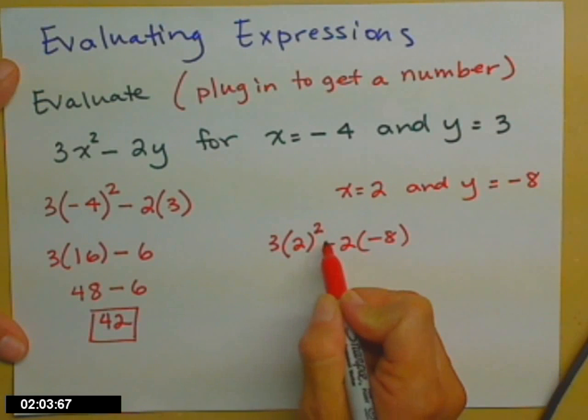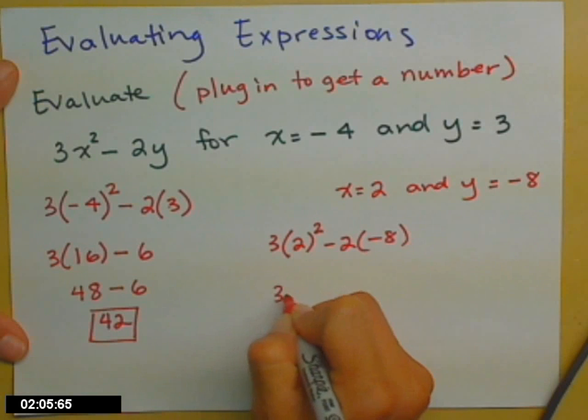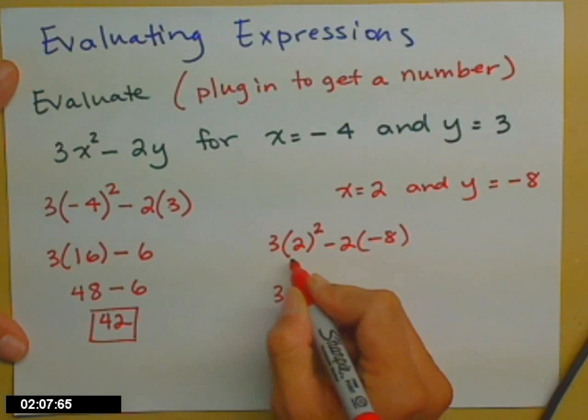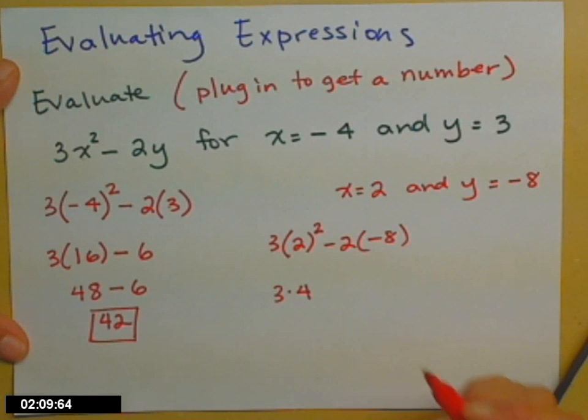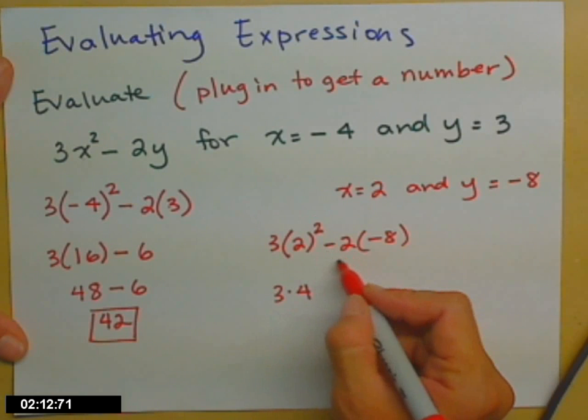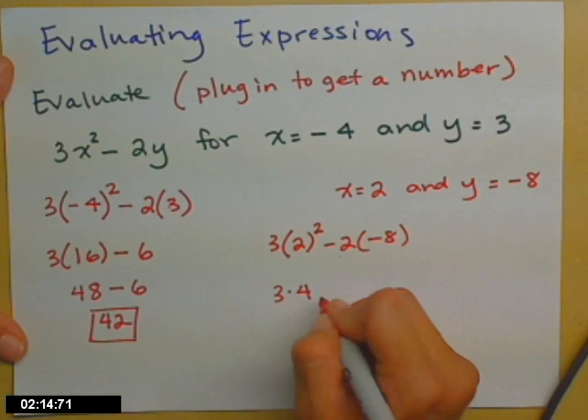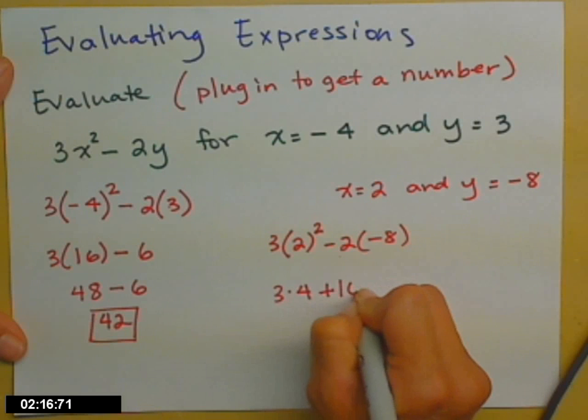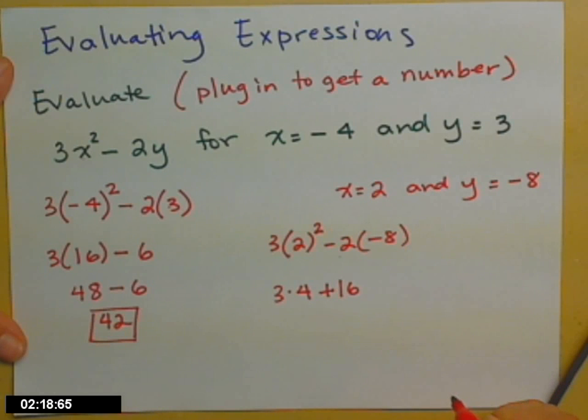So order of operations, I'm going to square the 2 first, 3 times 4, notice this time I wrote the multiplication as the little dot, and now I have negative 2 times negative 8, so that's going to be a plus 16 that gets added on.